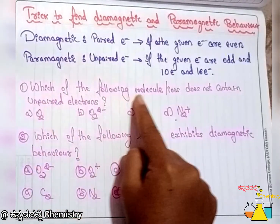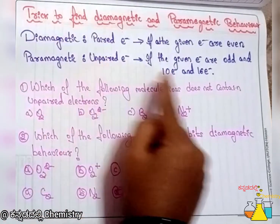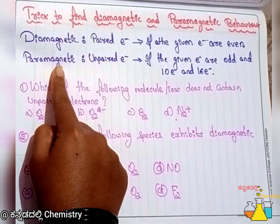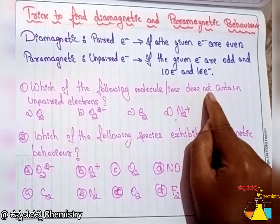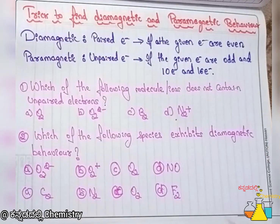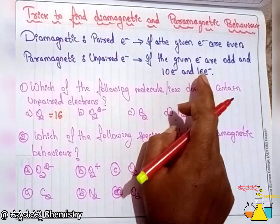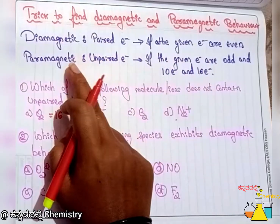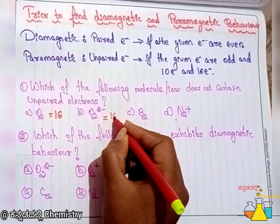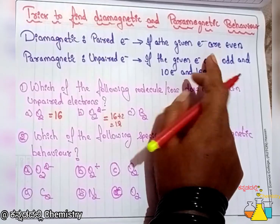Which of the following molecules or ions does not contain unpaired electrons? For O2²⁻: A2 is 16, plus 2 gives 18 electrons. 18 is an even number, so it is diamagnetic in nature.